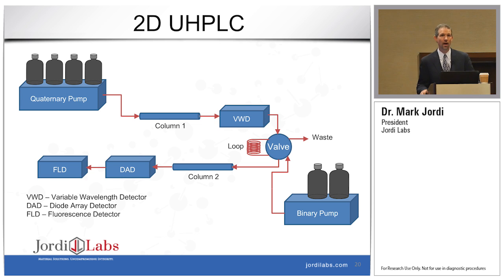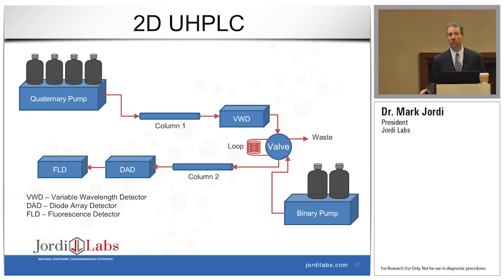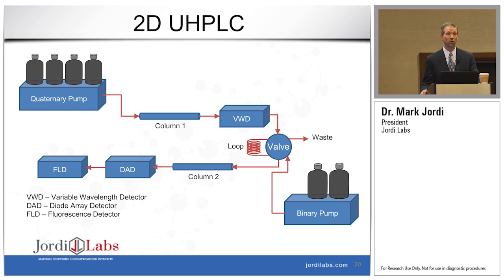I wanted to show you one example of some interesting work we've been doing recently on 2D UHPLC. When we get an extractables profile, particularly on a medical device or a complicated packaging system, there may be a large number of plastics involved, and sometimes we'll obtain extracts that have several hundred different constituents that we're tasked with quantifying. We've begun to rely heavily on 2D UHPLC for this. My instrumental setup has a quaternary pump in the first dimension going into a first column and then into a variable wavelength detector. We then have a valving system for hard cutting individual fractions or comprehensive cutting, which then feeds into a second column passing into either a DAD detector, fluorescence detector, or our QTOF system for further identification and quantification.